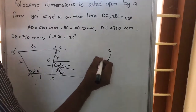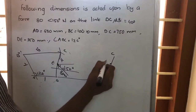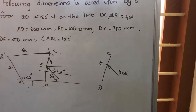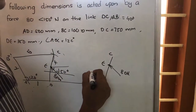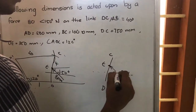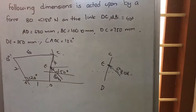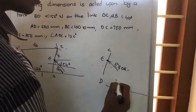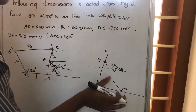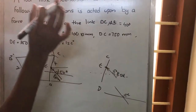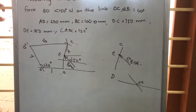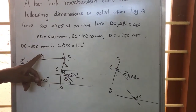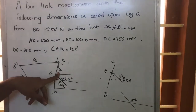We do not know the forces except the 80 Newton. So first we look at link DC. In DC, there is point E at 3.5 centimeter from D. There is a force of 80 Newton at E, and this 80 Newton is making 150 degrees with the horizontal.